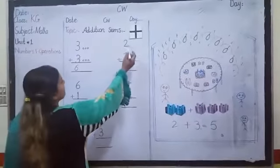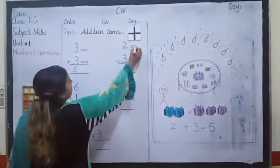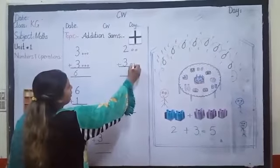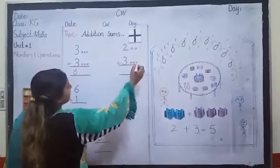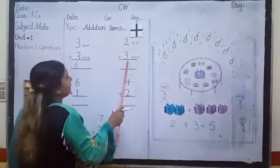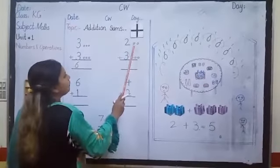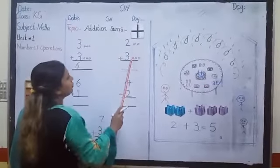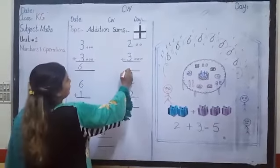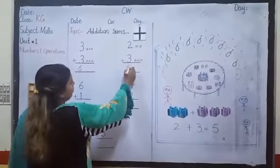Okay, now look at the next sum. This is number two, so we have drawn two circles. And this is number three. So how many circles do we have to draw? Yes, students — three circles. Now to add these two together, we count all the circles together. Count with me: one, two, three, four, five. So if we add two in three, the number will be five.